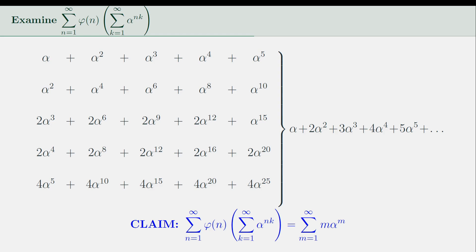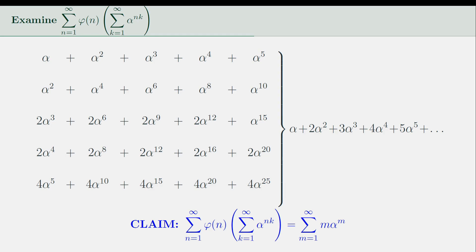To prove the claim, we make use of an important theorem related to the totient function. The theorem states that the sum of the totient of all positive divisors of a positive integer is equal to itself. The theorem itself is interesting enough, and is worth discussing on a separate piece.